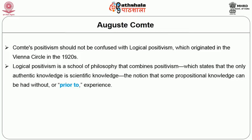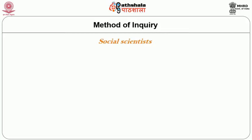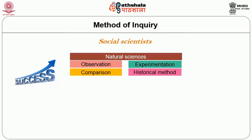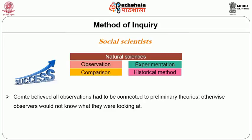Comte's positivism should not be confused with logical positivism, which originated in the Vienna Circle in the 1920s. Logical positivism is a school of philosophy that combines positivism — the view that the only authentic knowledge is scientific knowledge — with the notion that some propositional knowledge can be had without or prior to experience. Regarding method of inquiry, Comte believed that social scientists should use the same methods that proved successful in the natural sciences: observation, experimentation, comparison, and the historical method. He believed all observations had to be connected to preliminary theories; otherwise, observers would not know what they were looking at.